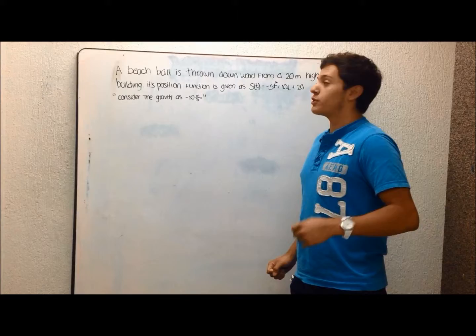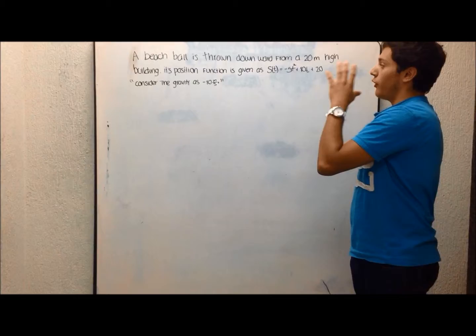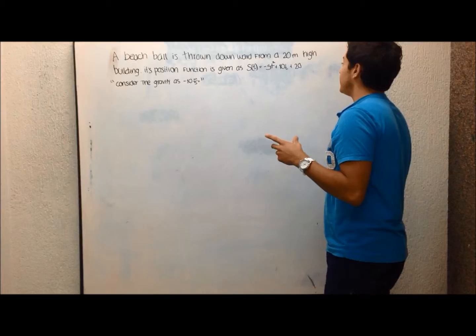The problem is that a beach ball is thrown downward from a 20-meter-high building. Its position function is given as s(t) = -5t² + 10t + 20. Consider gravity as -10 meters per second squared.